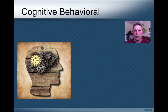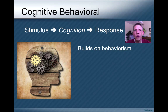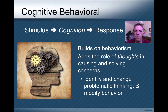Finally we get to cognitive behavioral counseling. The main idea is that in between stimulus and response — that model from behaviorism — something takes place in people's minds: they think about things. So if we understand what goes on in their thinking, maybe that'll help us change their behavior. CBT really builds on behaviorism; it doesn't reject any of that, but adds in the role of thoughts in causing problems as well as solving them. We need to identify and change problematic thinking as well as modifying behavior.